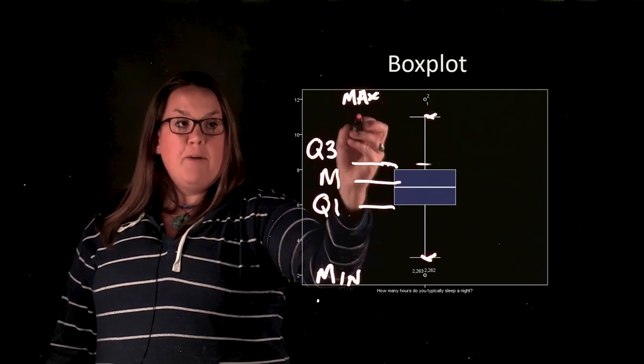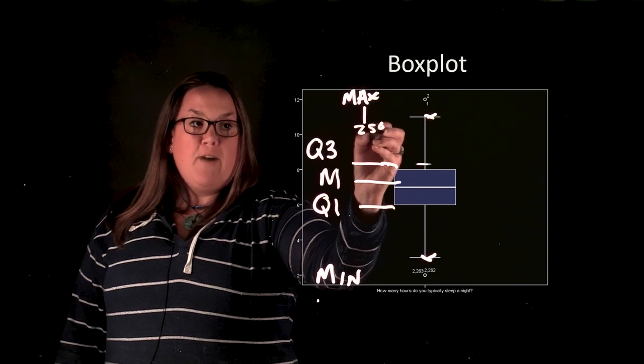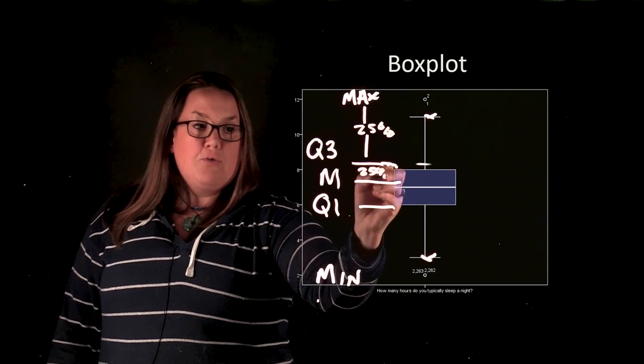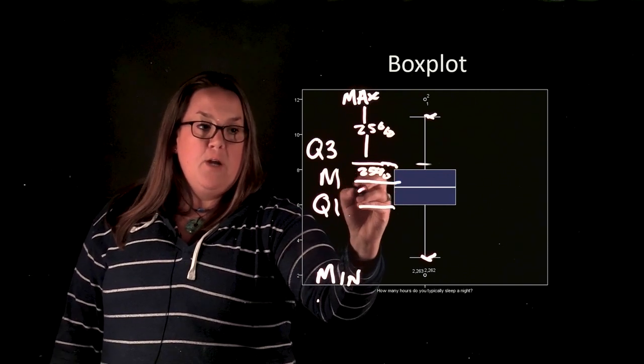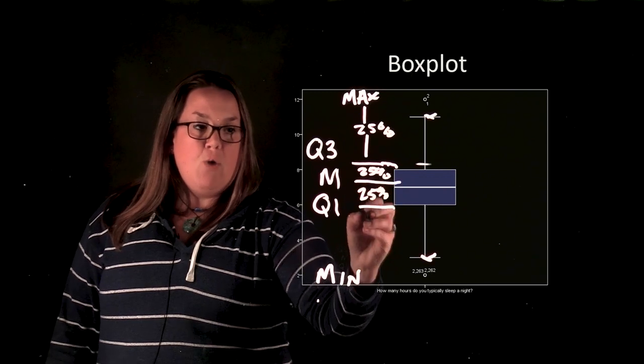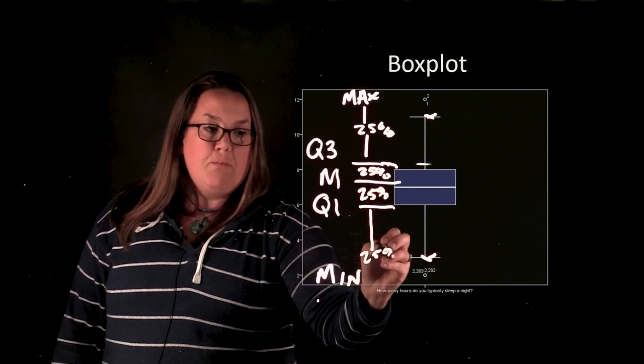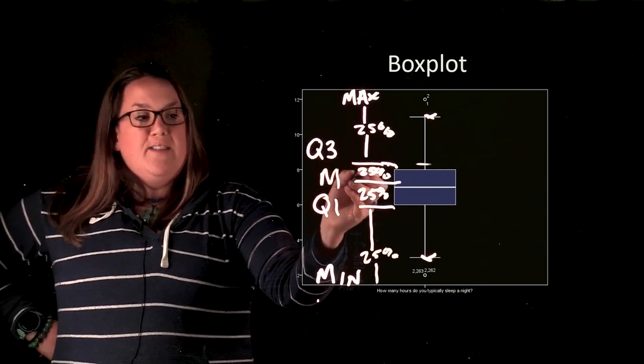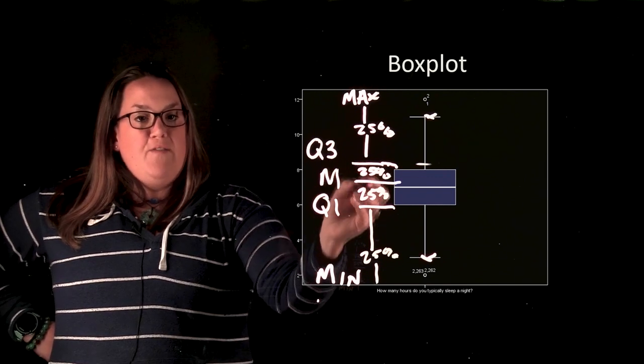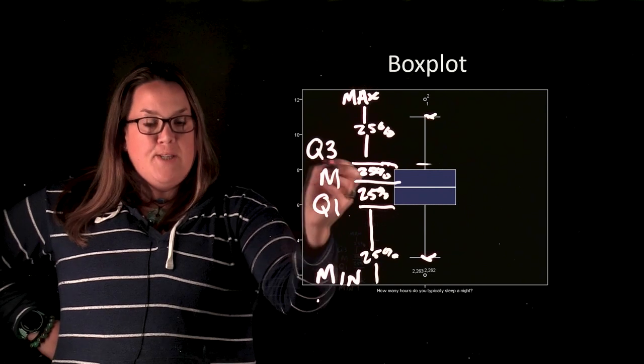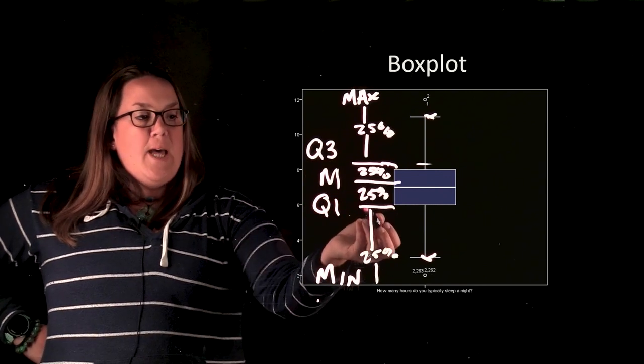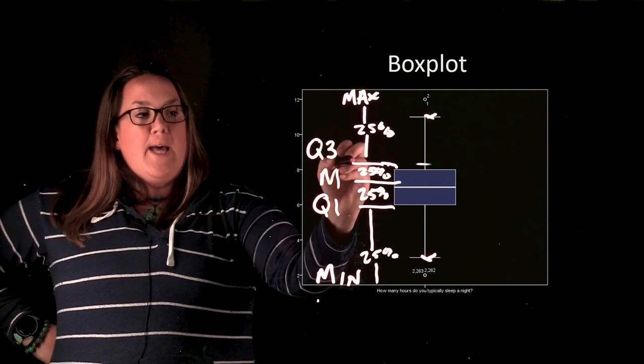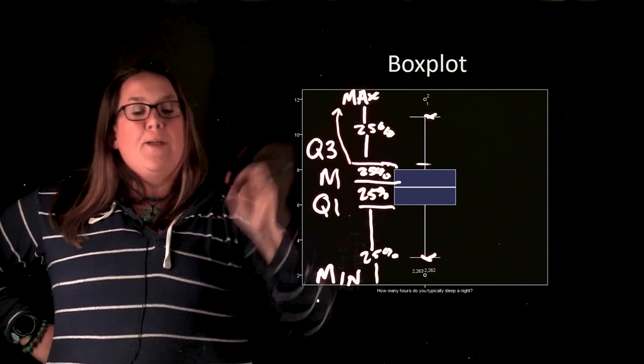And then remember too, that with this five number summary, we break the data up into 25% chunks. So that means between the maximum and Q3, there's 25%. There's 25% between Q3 and the median, 25% between the median and Q1, and then from Q1 down to the minimum, we would also have 25%. So that means you could say 50% of students sleep between six and eight hours per night, or you could say 25% of students sleep less than six hours per night, or you could say 25% of students sleep more than eight hours per night.